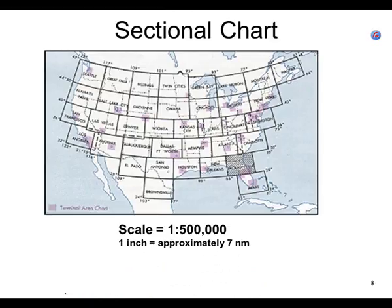Here's what I want you to write down about the sectional charts. The scale is one to a half of a million — one to 500,000. That means the chart is 500,000 times smaller than real life. I'm not going to ask you that one inch equals approximately seven nautical miles, but this scale is rather important because look how many different sectional charts you have to have to cover just the 48 states.